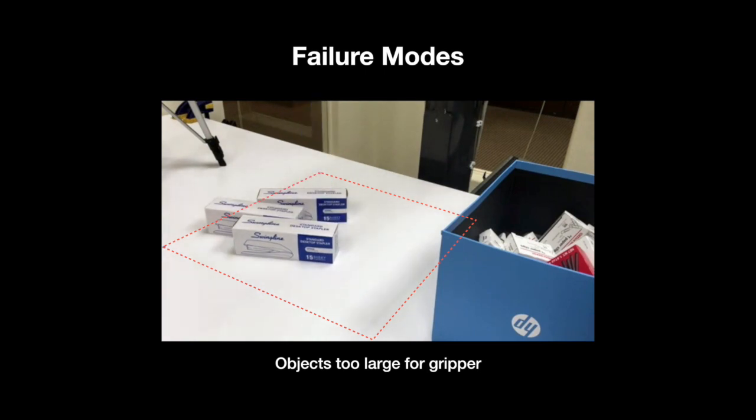Our system, however, has its limitations. For example, when faced with objects too large for the gripper, the algorithm would only perform pushing, since grasping Q values remain low.